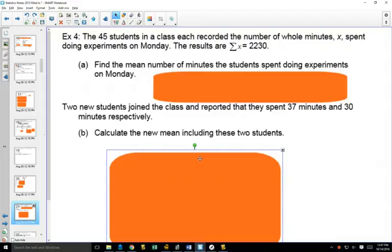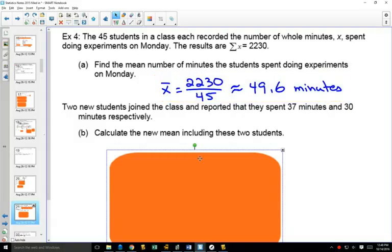So we got 45 students in a class. Each recorded the number of whole minutes spent doing experiments on Monday, and so here we have to know what that notation means. That means that they've added up all of their minutes together and they got 2230. So how do we find the mean? That's just the total number divided by how many students, approximately 49.6 minutes. So another thing to note here, if you've got a question that has units, in this case the units are minutes, include those in your answers. So we've got three important things happening in this little question: we've got our approximation symbol, we've got three sig figs, and we've got units.